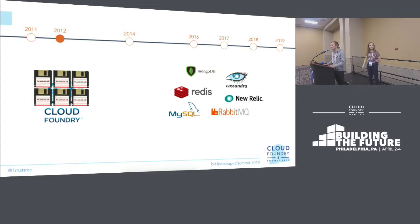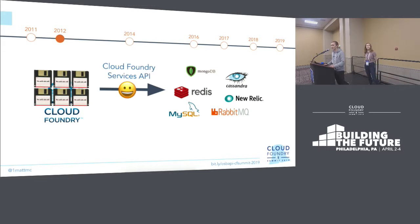Those backing services aren't just things like persistence — like databases, MySQL — but also things like auto-scaling, monitoring services, and configuration services. We wanted a really easy way for service providers building things like Mongo and New Relic to make their services available to all those Cloud Foundry apps. So some clever people put their heads together and thought, OK, let's make an API. And the Cloud Foundry Services API was born.